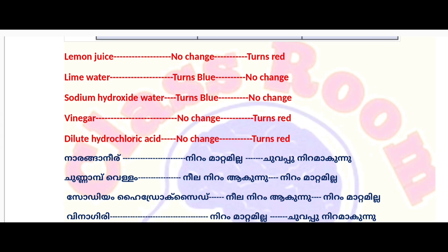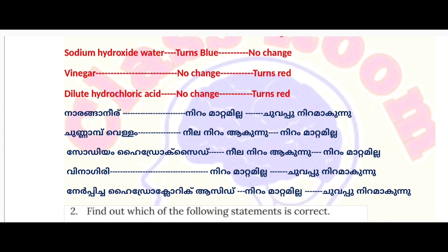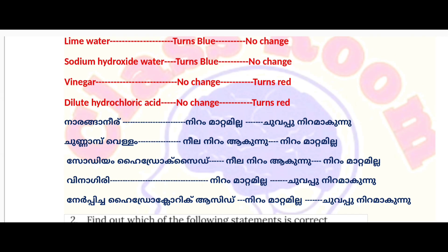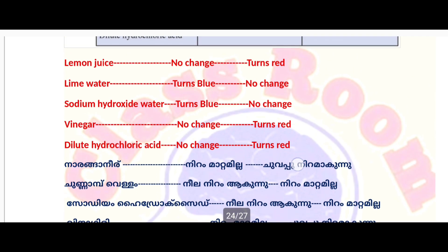Sodium hydroxide is an alkaline substance. Red litmus paper turns blue. Blue litmus paper shows no color change. Dilute hydrochloric acid is an acidic substance. Blue litmus paper turns red.